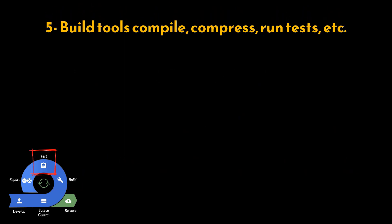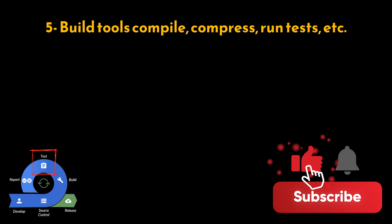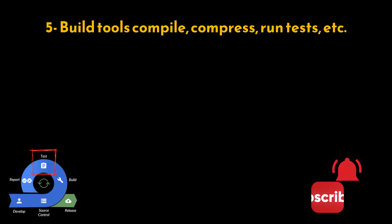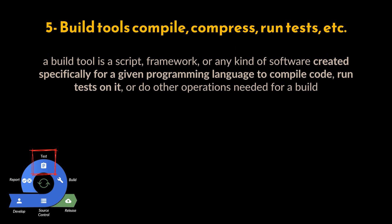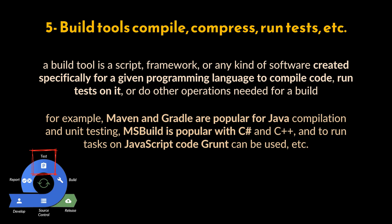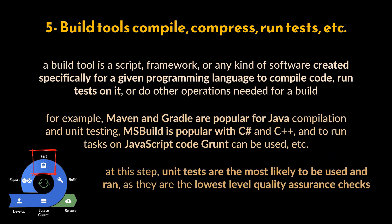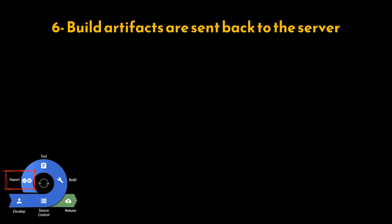Step five: build tools compile, compress, run tests, etc. A build tool is a script, framework, or any kind of software created specifically for a given programming language to compile code, run tests, or do other operations needed for a build. For example, Maven and Gradle are popular for Java compilation and unit testing, MSBuild is popular with C# and C++, and Grunt can be used for JavaScript. Unit tests are the most likely to be run at this step, as they are the lowest-level quality assurance checks.